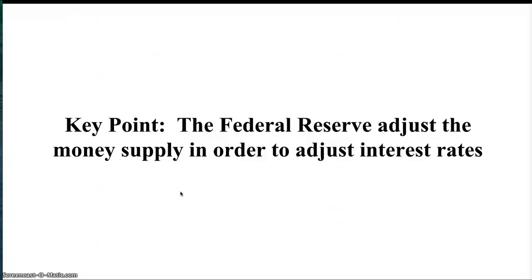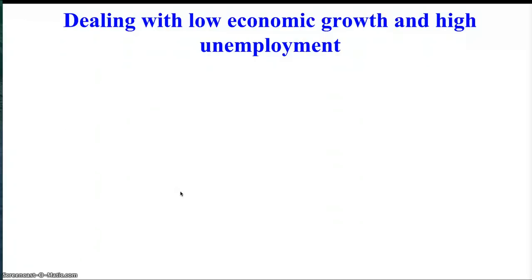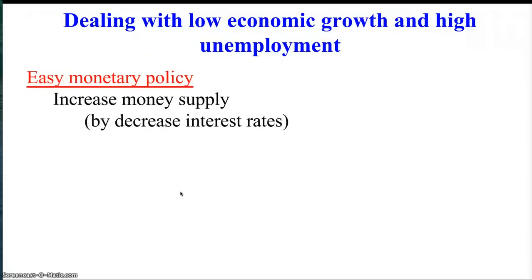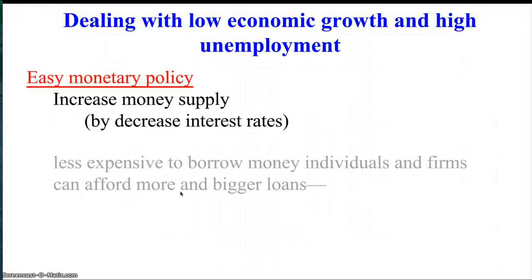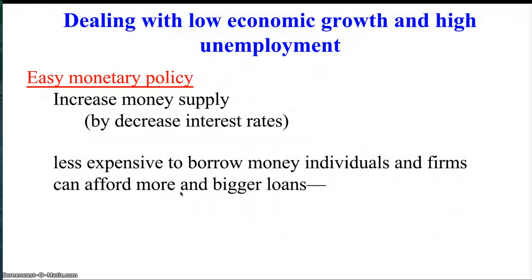Let's assume there's a problem in the economy — low economic growth, low GDP, and high unemployment. The Federal Reserve would begin a policy called easy monetary policy, which means they're going to try to add money to the economy. They add money to the economy in order to get interest rates to come down. If the money supply is increased and interest rates come down, it will be less expensive to borrow money — money will be cheaper.